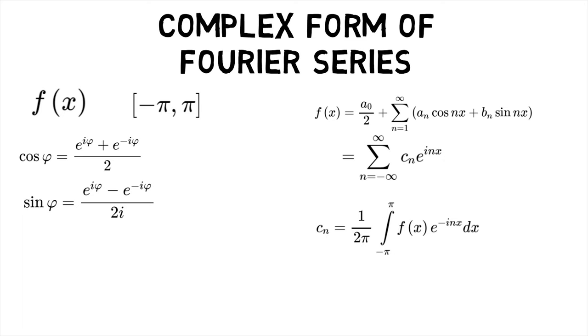cn is called the complex Fourier coefficient and is defined by the formula cn equals 1 upon 2 pi into integral of f of x into e power minus i n x dx from minus pi to pi. Here, n may take any integer value.